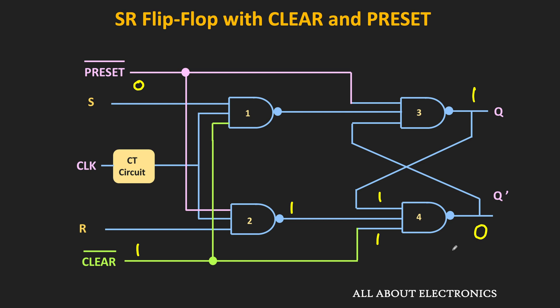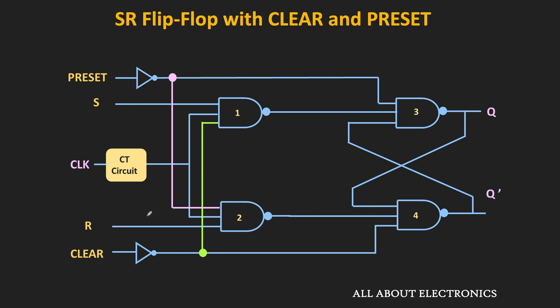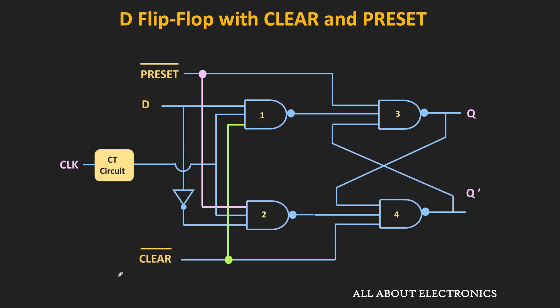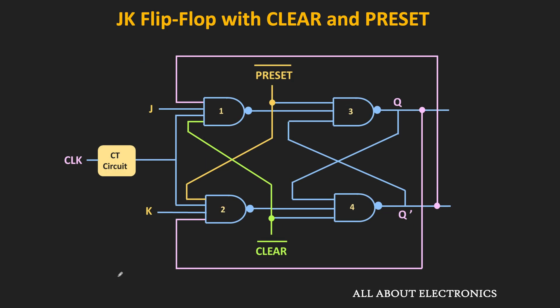If we want to convert to active-high inputs, we just need to add two more NAND gates. The preset input line will become 0 when the preset input is 1, and similarly the clear input line will become 0 when the clear input is 1, making the circuit work as active-high preset and clear inputs. Similarly, this is the circuit of the D flip-flop with clear and preset inputs — the preset input is given to gates 2 and 3, and the clear input is given to gates 1 and 4. Likewise, this is how the preset and clear inputs can be added to the JK flip-flop.